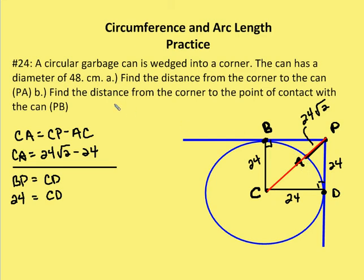Finally, very simply, we can find PB because BP is going to be the same length as CD — I have a rectangle here, and it's actually a square. So BP and CD are congruent, meaning BP equals CD, which equals 24.